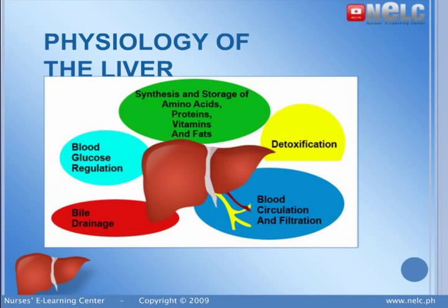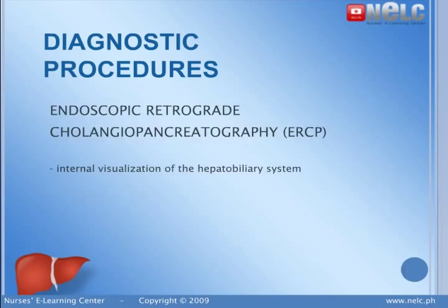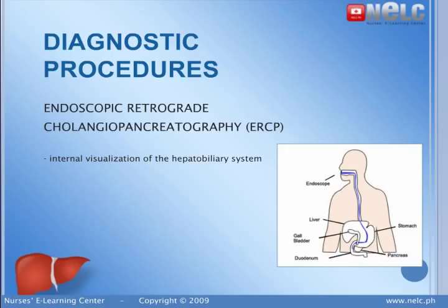Let's talk about some of the diagnostic procedures. Endoscopic retrograde cholangiopancreatography, also called ERCP for short, is the examination of the hepatobiliary system with the use of an endoscope, which is a long, flexible tubing with a light at the end. It's inserted through the esophagus and into the stomach, then into the duodenum. Then a dye is injected so that the organs will be seen through use of fluoroscopy.